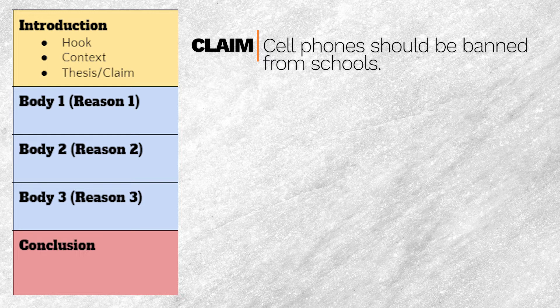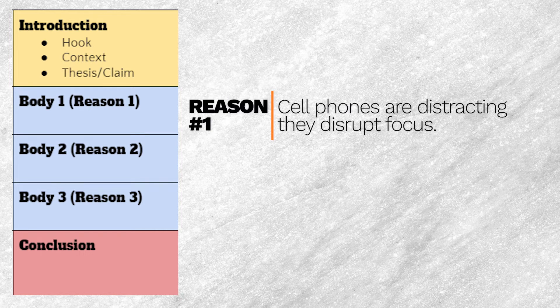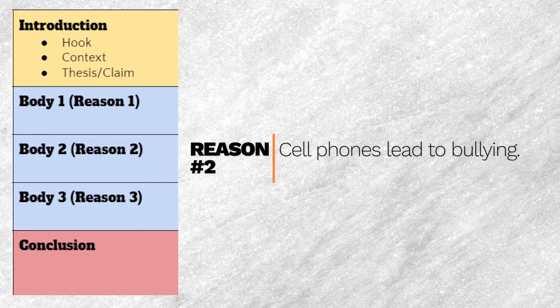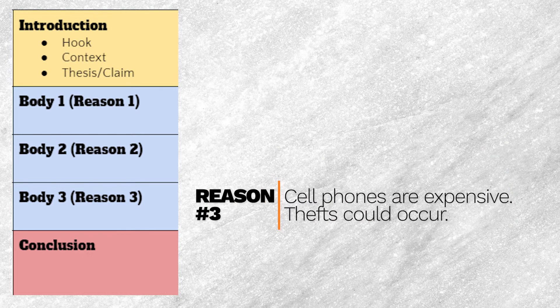I've got three points written out. Number one: cell phones are distracting — they cause students of all ages to be unable to focus. Point number two: cell phones pose a risk of allowing bullying. Students use cell phones to engage in cyberbullying, and students without nice phones might feel left out. Point number three: cell phones are expensive, and their presence in a school environment could lead to theft, up to misdemeanor and felony charges in many states.